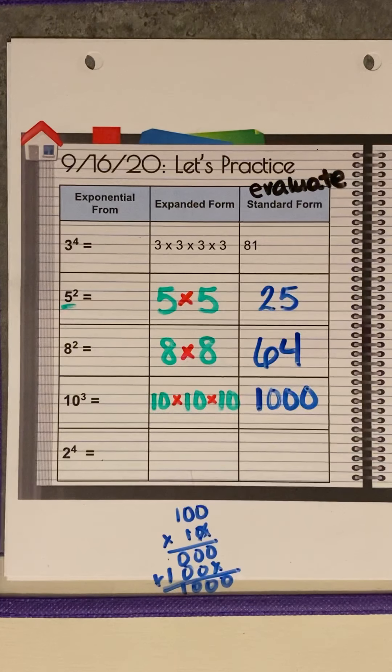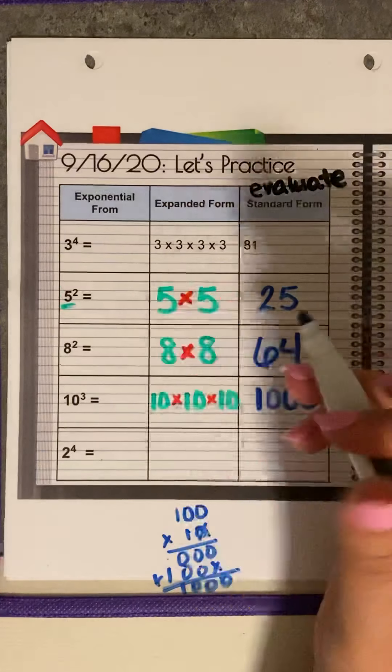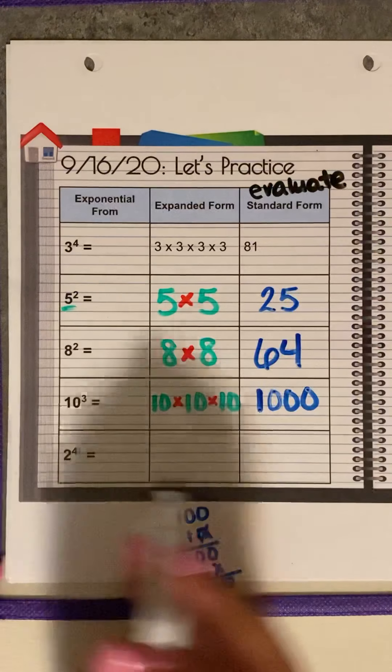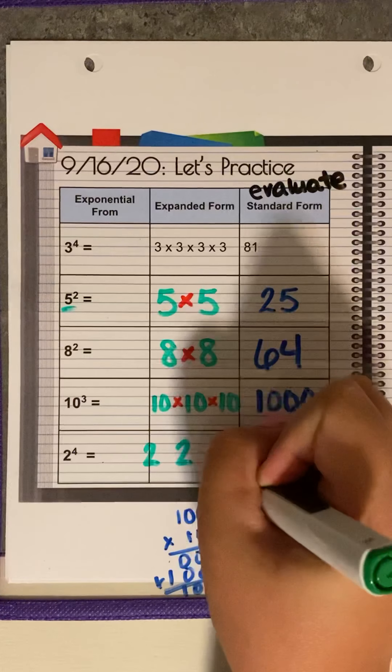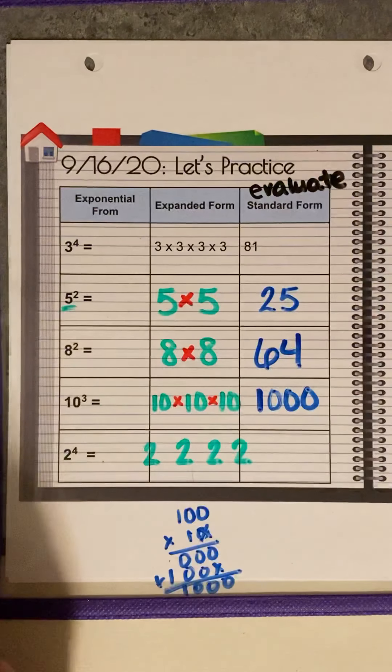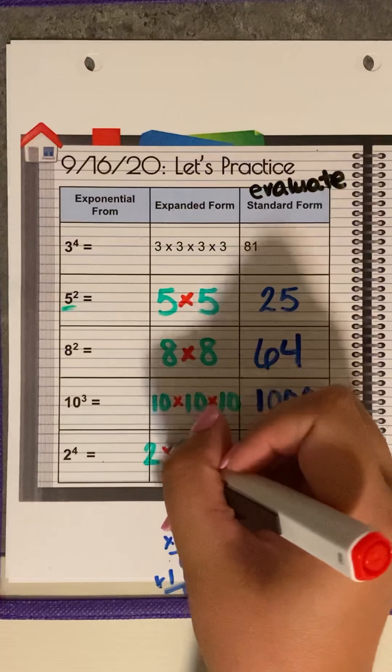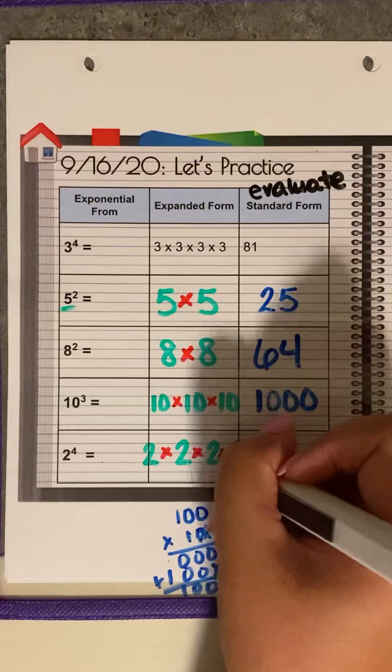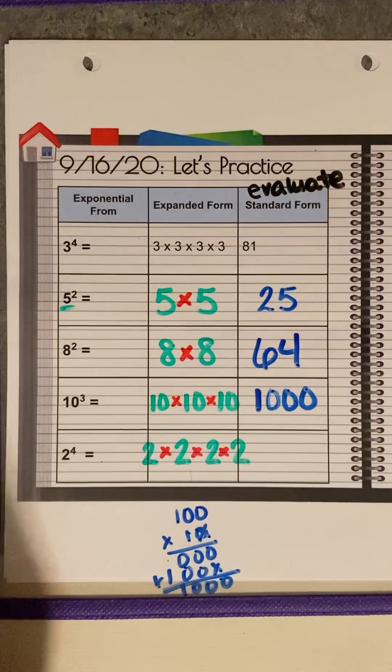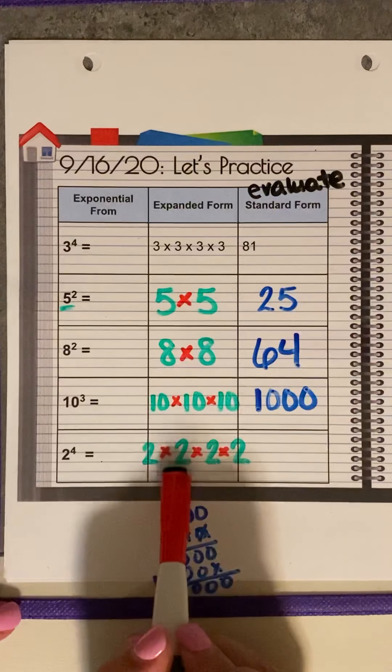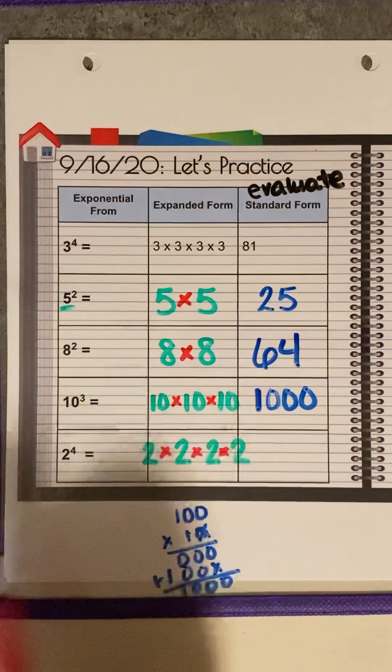Now, how about two to the fourth power? What's our base? Our base is two. So we're going to have two. And how many times are we going to see that two? Four times. So we're going to have a two, two, two, two. And what are we doing with those twos? Multiplying. So two times two times two times two. Now, what is two times two? That's four. Four times two, eight. Eight times two is going to be sixteen.